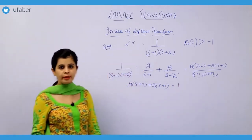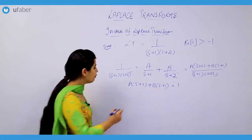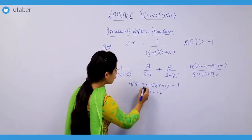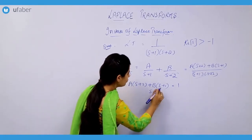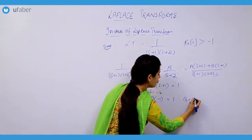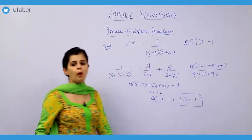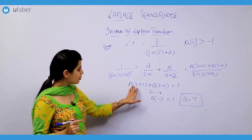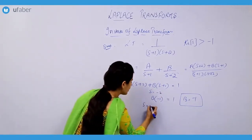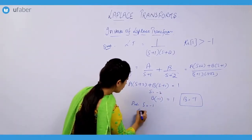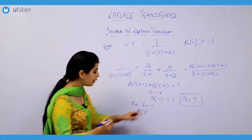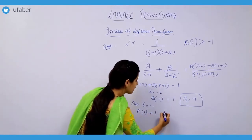Now I have to find the values of A and B. First, put s = -2: the A term becomes 0, and B·(-1) = 1, so B = -1. Similarly, to find A, put s = -1: the B term becomes 0, and A·(-1+2) = A·1 = 1, so A = 1.